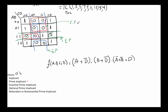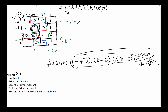For the optional prime implicant, we can use either of two groups to cover the remaining zero. If we take the horizontal group, we get b' · c (since b is zero uncomplemented and c is zero uncomplemented). If instead we take the other optional group, we get b' · d' (b zero uncomplemented, d zero uncomplemented). The final function can be written using either optional term — both are equally valid minimal forms.